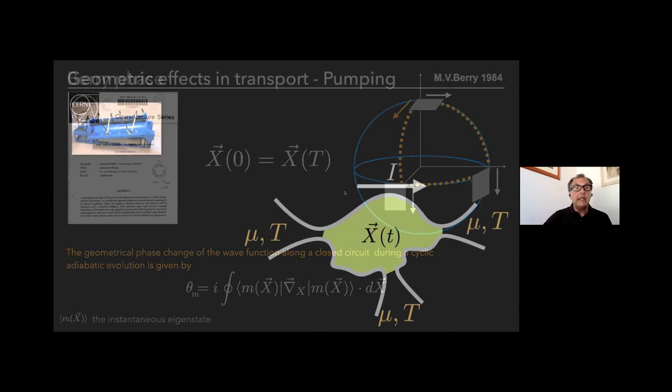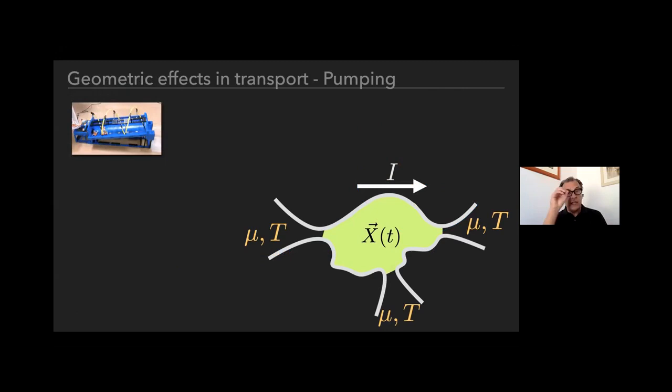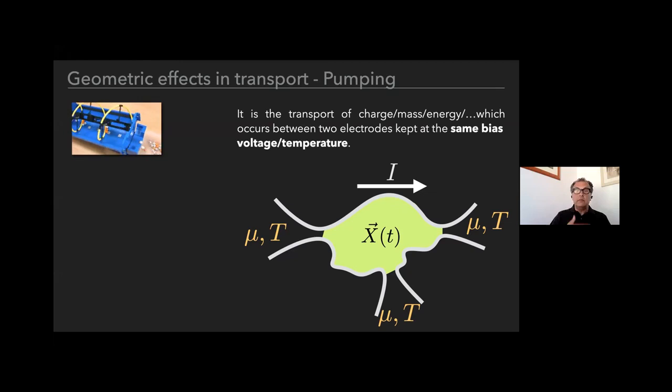Since then, the presence of Berry phase appeared in many different contexts. I will highlight those which are connected to what I'm going to present in the second part of my talk. One important effect where geometric phases appear is in transport and pumping. Imagine you have a piece of conductor connected to various thermal reservoirs so that you can transport charge or energy.